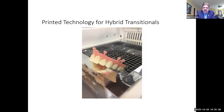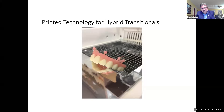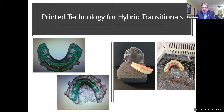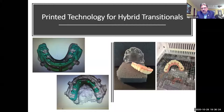We've also been working with printed technology for hybrid transitionals. We recommend a surgical guide on all these types of cases. With printed technology combined with surgical guides, we can actually print the provisional denture with the access holes already drilled out. Everything is designed on Three Shape or Exocad — it'll be in correct occlusion with all access holes utilizing the surgical guide. This technology has been very successful lately. In the future, I don't think you'll see as many in-office conversions with hand-drilling, because everything is going to be done digitally. We've come a long way digitally, even with digital dentures.